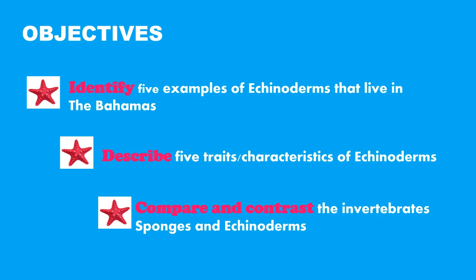After watching this video, you will be able to identify five examples of enkinoderms that live in the Bahamas, describe five traits or characteristics of enkinoderms, and compare and contrast the invertebrates, sponges, and enkinoderms.